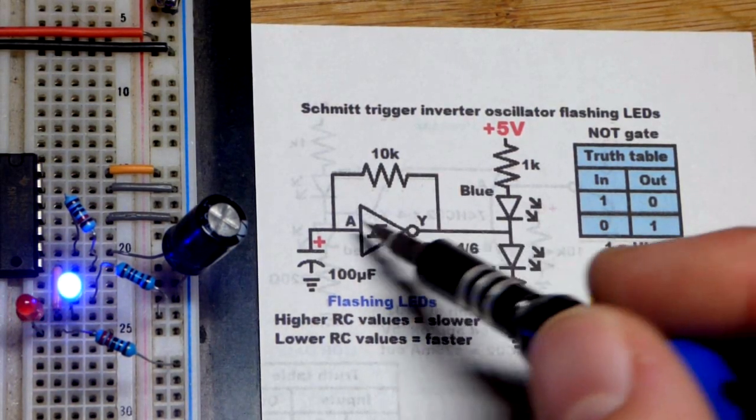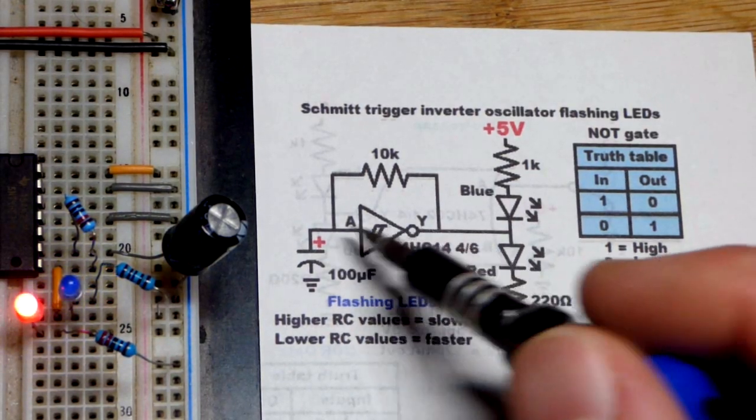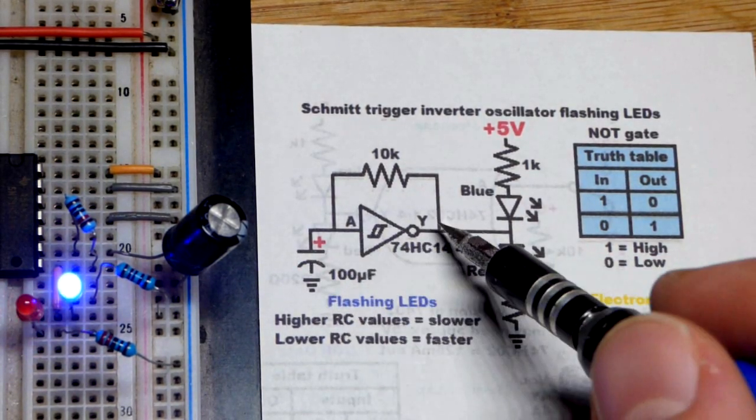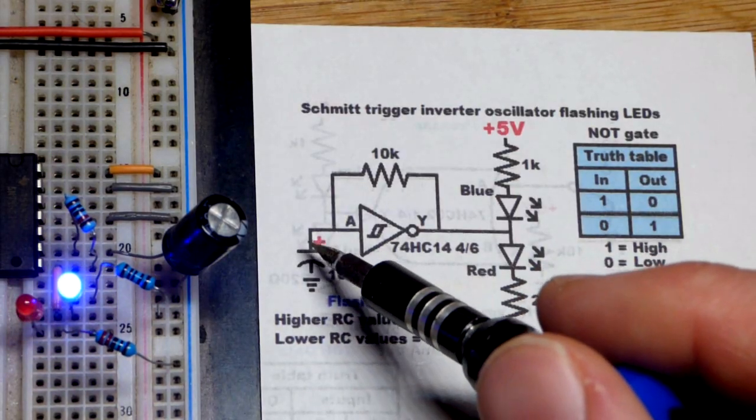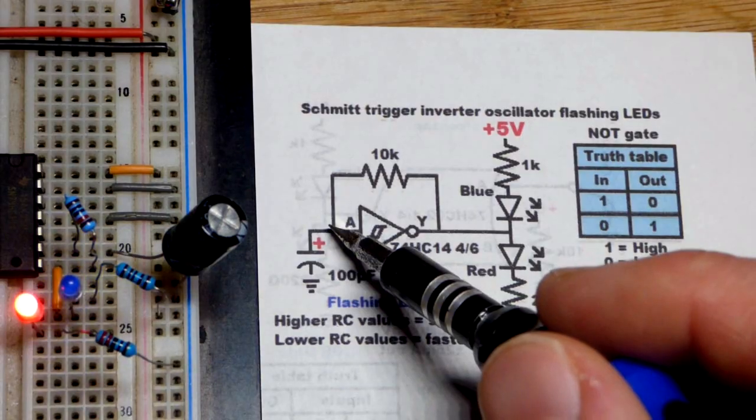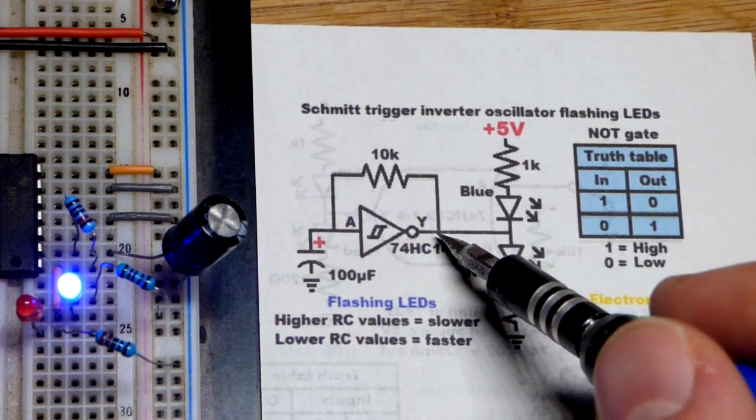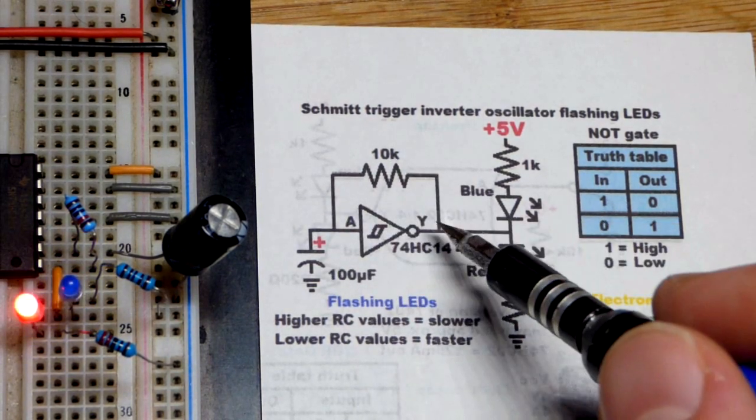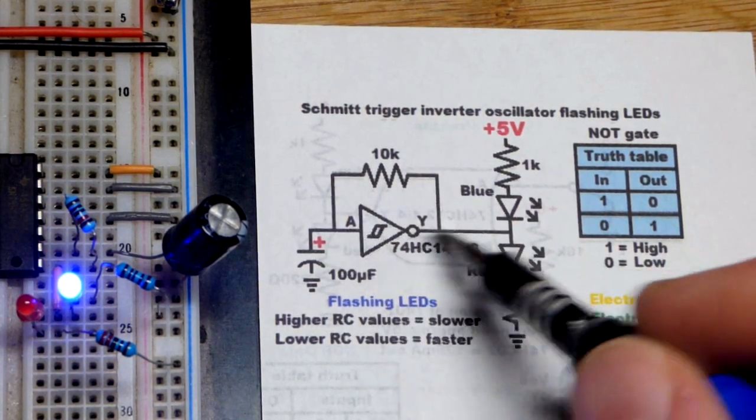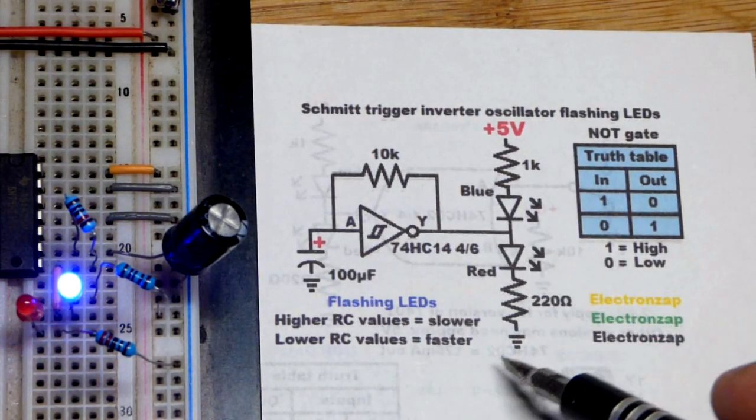Because the output wants to be the opposite of the input. But when you got feedback, that pulls the input in the direction of the output. And once it overcomes that hysteresis, because it's a Schmitt trigger, then it flips states. This gets high enough where that gets low. And then this discharges until this gets low enough that that flips high.